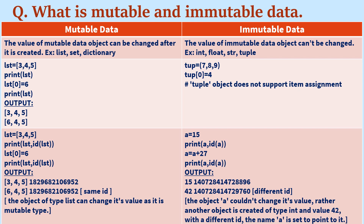For example, you can see in the left column there is a list type of data having values 3, 4, and 5. If you print the list you get those values. If you then change the value at index number zero to 6 — assigning lst[0] = 6 — then if you print again, the value will be changed: you will get the list as 6, 4, and 5.